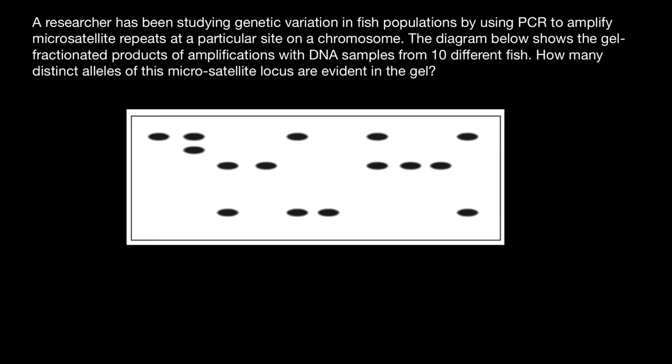A researcher has been studying genetic variation in fish populations by using PCR to amplify microsatellite repeats at a particular site on a chromosome. The diagram below shows the gel-fractionated products of amplifications with DNA samples from 10 different fish. How many distinct alleles of this microsatellite locus are evident in the gel?